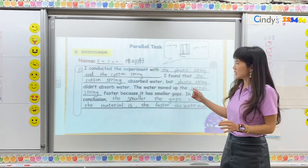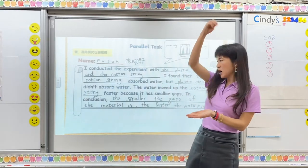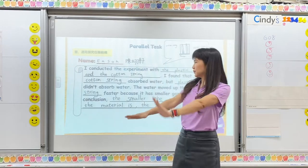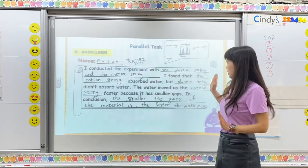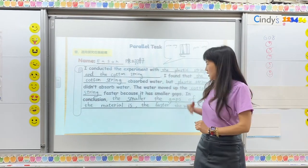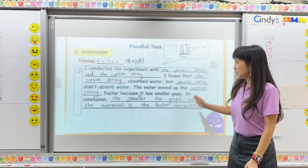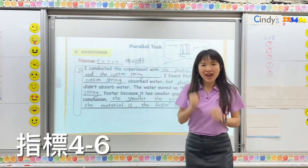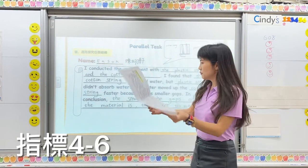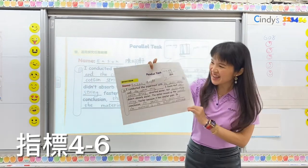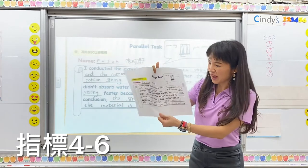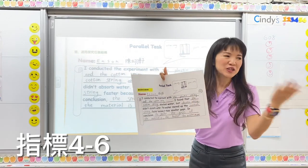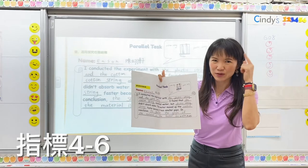I found that the cotton string absorbed water, but the plastic string didn't absorb water. The water moved up the cotton string faster because it has smaller gaps. In conclusion, the smaller the gaps of the material, the faster the water moves. Ethan, you did a great job. I love your writing — very neat — and you drew a picture here to help your teammates understand what you are thinking.